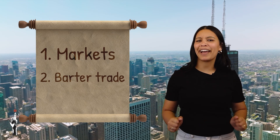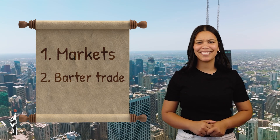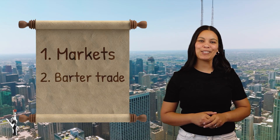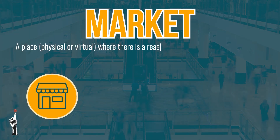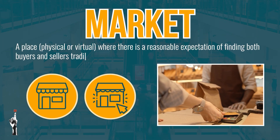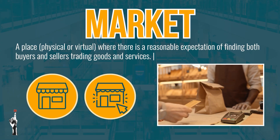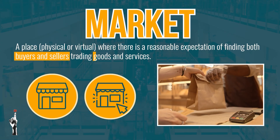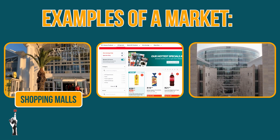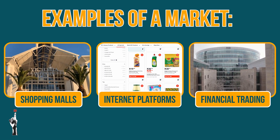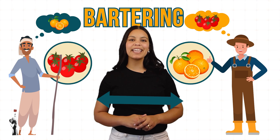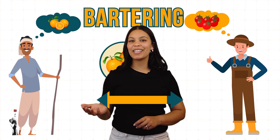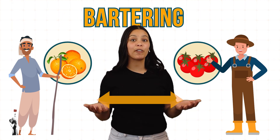Let's see if you can remember what these terms are. A market is a place, physical or virtual, where there is a reasonable expectation of finding both buyers and sellers trading goods and services. Examples of these markets are shopping malls, internet platforms and financial trading such as the JSE. Bartering is the exchange of goods and services without the use of money.